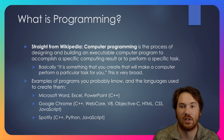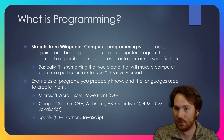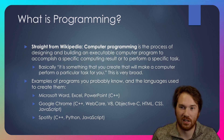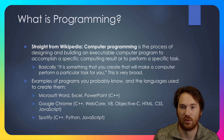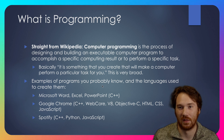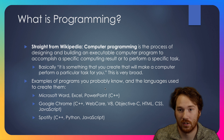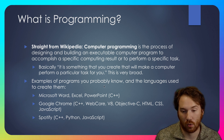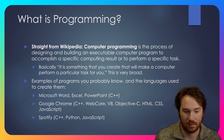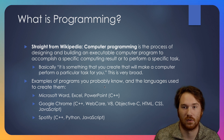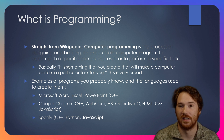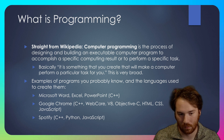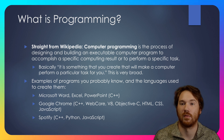Practically everything you use on a computer is a computer program and therefore is written in a programming language. For example, Microsoft Word, Excel, and PowerPoint all use a language called C++. Google Chrome uses C++, WebCore, V8, Objective-C, HTML, CSS, and JavaScript. Spotify uses C++, Python, and JavaScript. This gives you a sense of what types of applications are out there and what programming languages they're written in.